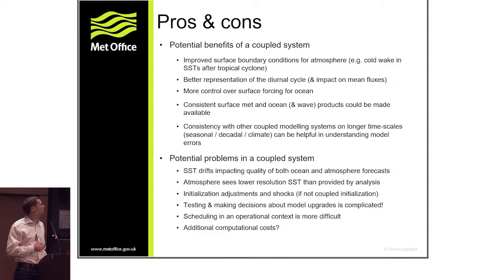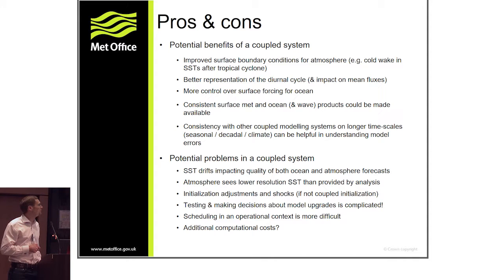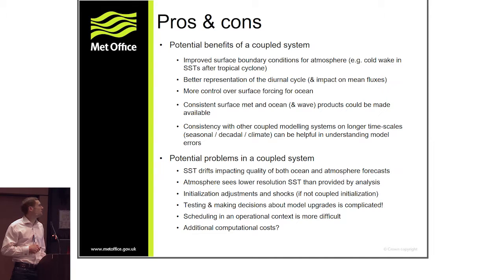Having said that, there are a number of potential problems. Sea surface temperature drifts are perhaps hardest to control in a fully coupled system and could impact forecast quality for both atmosphere and ocean. The atmosphere will typically see a lower-resolution SST than is provided by the kind of high-quality SST analysis used by many NWP systems.